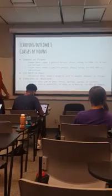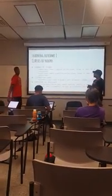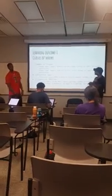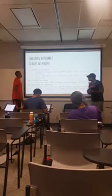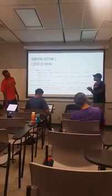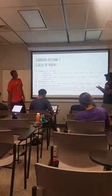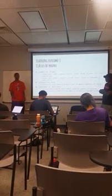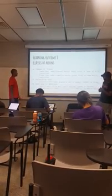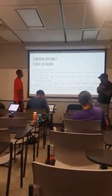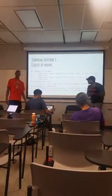So learning outcome one: classes of nouns. You have common or proper noun. A common noun is a general place, person, thing, or idea, and it is not capitalized. A proper noun is a specific person, place, thing, or idea, and it is capitalized. A collective noun is a name for a group or unit of people, animals, or things. And concrete or abstract nouns — concrete can be seen, heard, smelled, or tasted. And abstract cannot be heard, seen, smelled, or tasted.